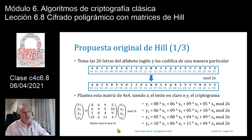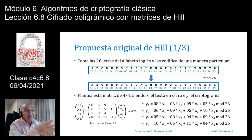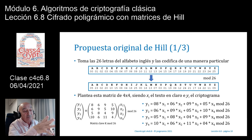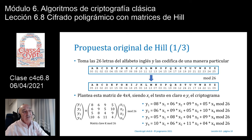La matriz propuesta por Hill es: 8, 6, 9, 5 / 6, 9, 5, 10 / 5, 8, 4, 9 / 10, 6, 11, 4 — una matriz de 4x4 porque se cifran bloques de 4 letras X1, X2, X3, X4, llamada matriz clave. La matriz clave tendrá que tener ciertas propiedades para que luego pueda descifrar. Así fue la propuesta de cifrado de Lester Hill en el año 1929.